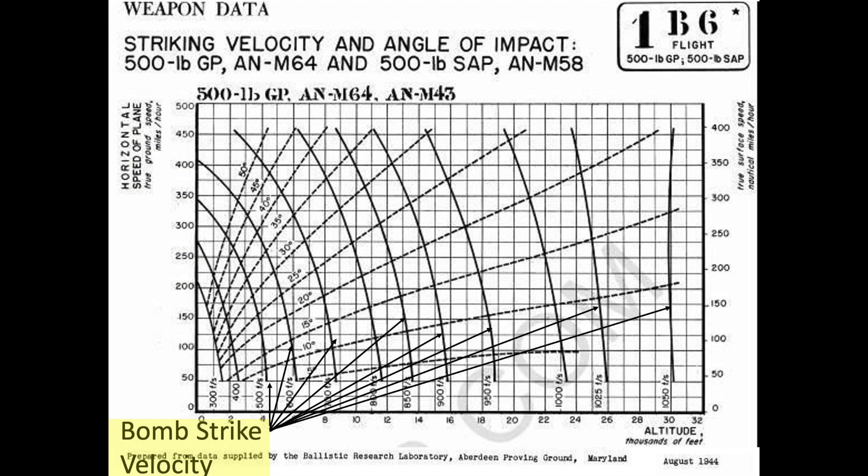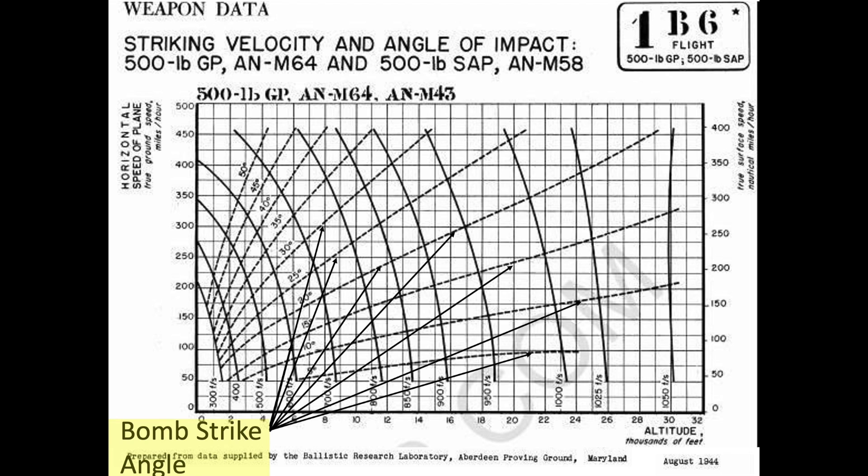The solid lines are the bomb's ground striking speed measured from 300 to 1,050 feet per second. The dashed lines are the bomb's strike angle measured from vertical from 5 to 50 degrees. Let's look at an example.